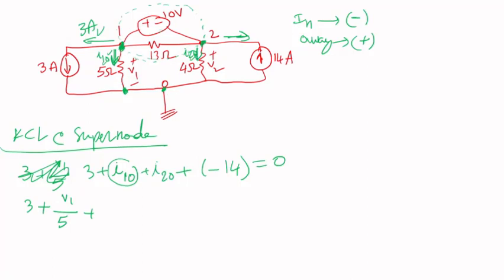So that's 5 plus I2,0, which is this current here, which is this voltage V2 minus V0, which is just V2 divided by 4. So V2 divided by 4 minus 14 equals 0.